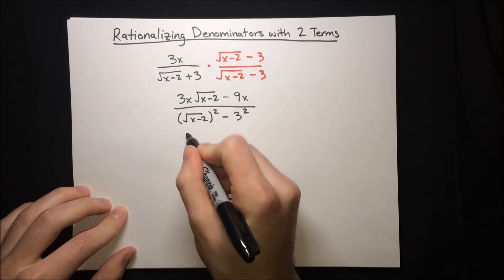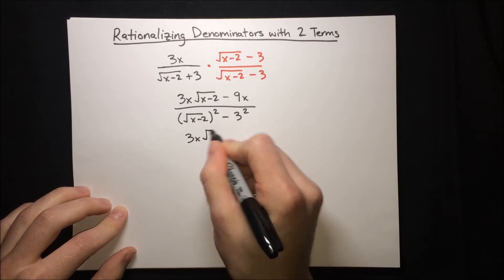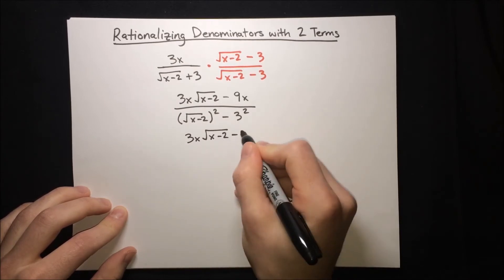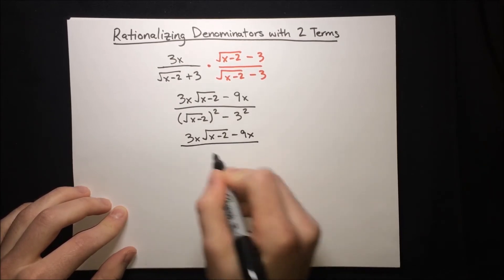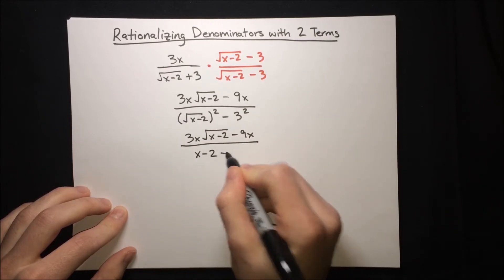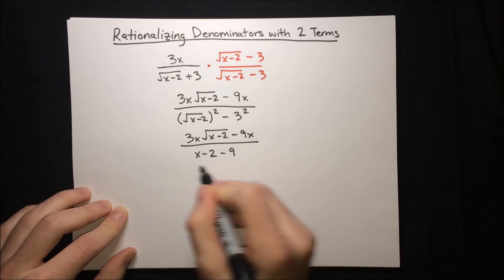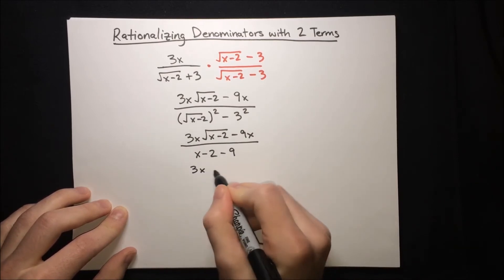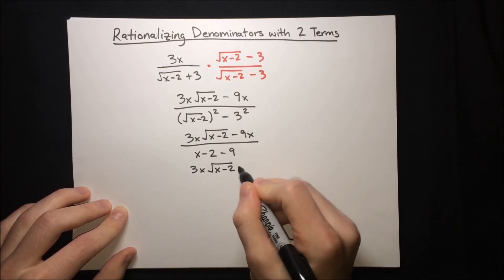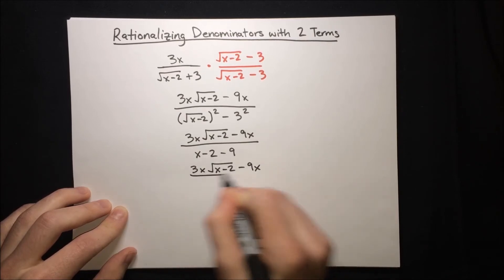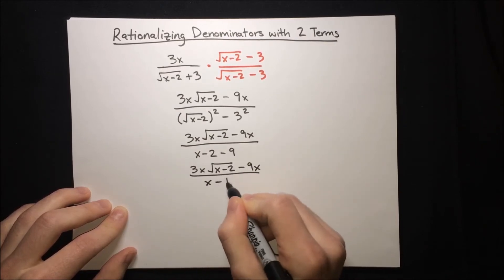And we'll just simplify a bit more. So 3x root x minus 2 minus 9x over, this becomes just x minus 2, the root goes away, then minus 9, and one last round of simplification to simplify that denominator: x minus 11.